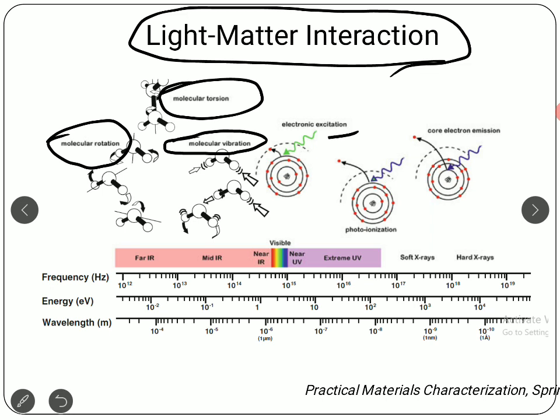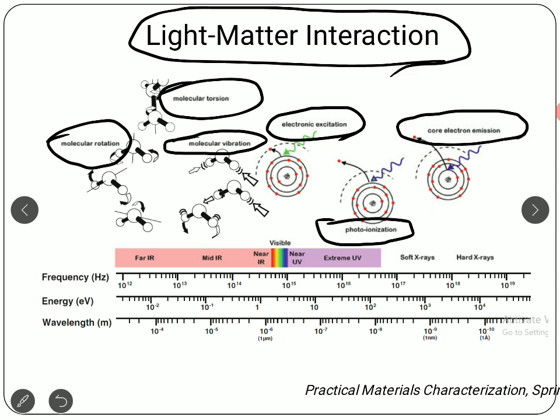There is also a possibility of electronic excitation. If the energy is sufficient — enough to knock out an electron — there might be electronic excitation, and this might result in photo ionization, where an electron is knocked out because of the incoming radiation. There is also a possibility that electrons closer to the nucleus are extracted because of the incoming radiation, resulting in core electron emission. It entirely depends on how much energy is incident on the sample.